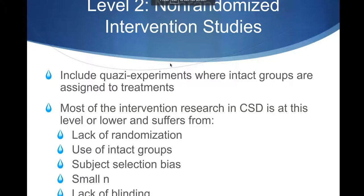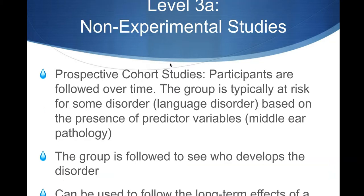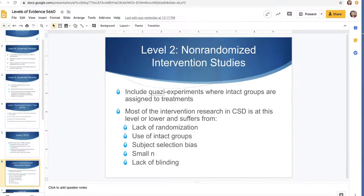The next one is level two, which is a non-randomized intervention study. These are going to be group studies comparing one group versus another, or one group comparing pre-test versus post-test. These can also include quasi-experiments with intact groups. Most of the intervention research in our field is here or lower — lack of randomization, use of already formed groups, subject selection bias, small N's, and lack of blinding are all reasons a study falls at level two.